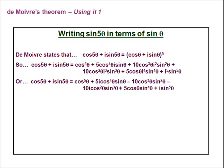Now we can replace the i² terms with −1. So in our third term, we have −10cos³θ·sin²θ, and every other term contains an i² or i⁴, so we can simplify. We end up with either real terms or imaginary terms with a single i.